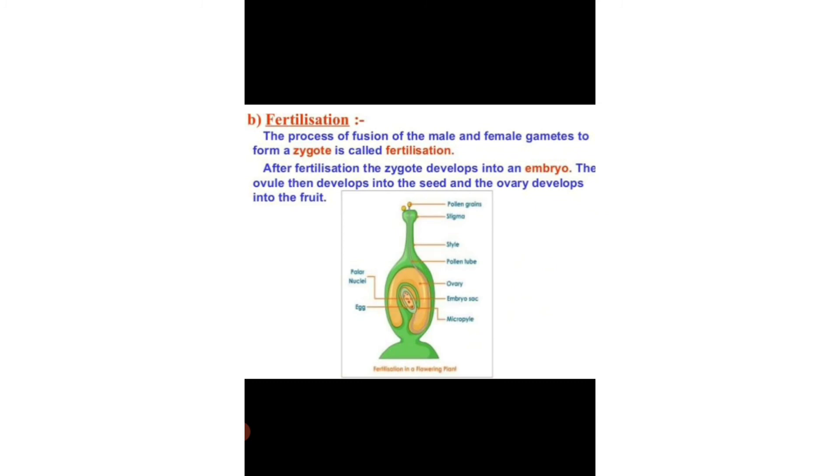Now we will learn about fertilization. The process of fusion of the male and female gametes to form a zygote is called fertilization. After fertilization, the zygote develops into an embryo. The ovule then develops into the seed and the ovary develops into the fruit.